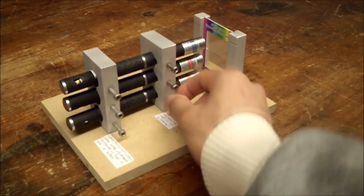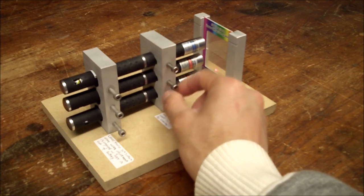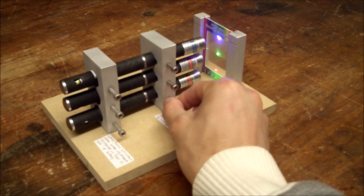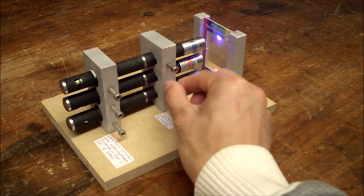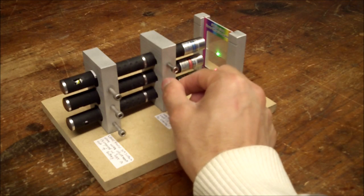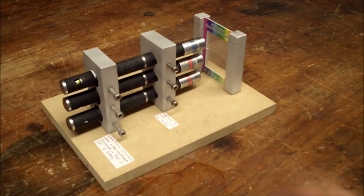These set screws on the front block turn the lasers on and off. You don't need much pressure at all. Just turn them until the laser turns on and be gentle with them in general.